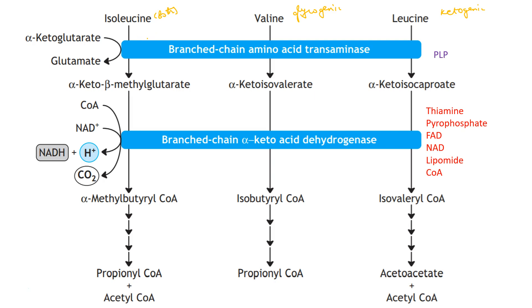The first three metabolic reactions are common to the branched-chain amino acids. The first one is a transamination reaction with the help of enzyme branched-chain amino acid transaminase. Isoleucine forms alpha-keto-beta-methylvalerate, valine forms alpha-ketoisovalerate, and leucine forms alpha-ketoisocaproate. The second reaction is oxidative decarboxylation, which occurs with the help of BCKD, which is branched-chain ketoacid dehydrogenase enzyme.